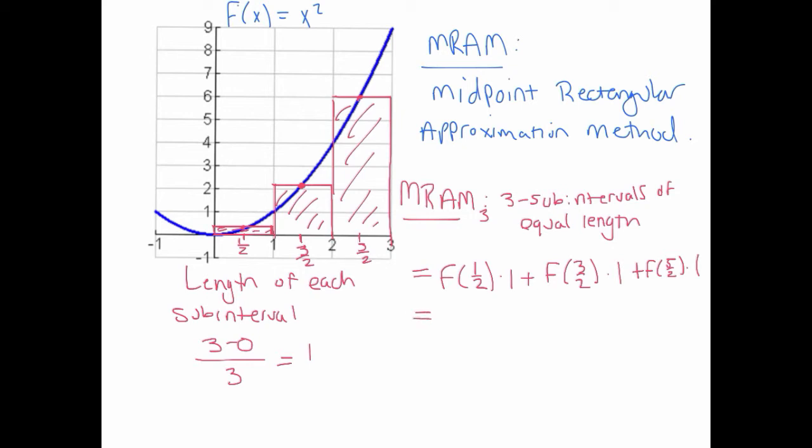And so if we compute these out, the function is x squared, so it would be one-fourth times one plus nine-fourths times one plus 25-fourths times one. And that gives a total of 35-fourths, which ends up being 8.75.